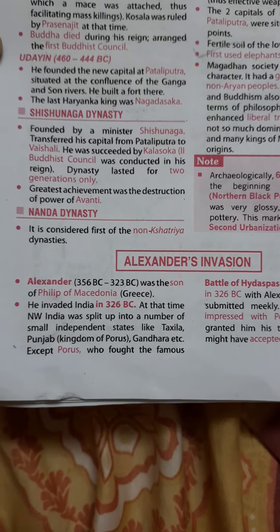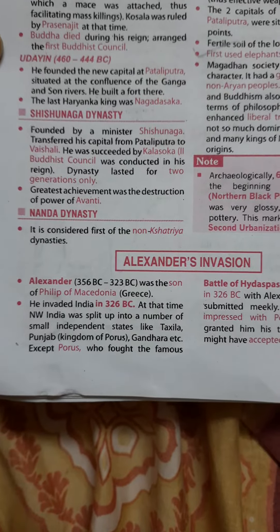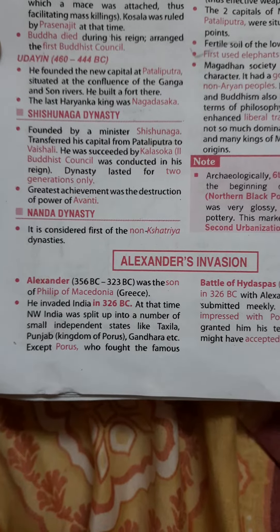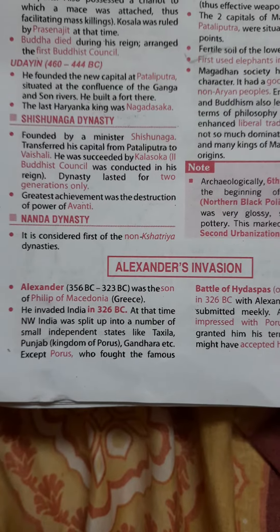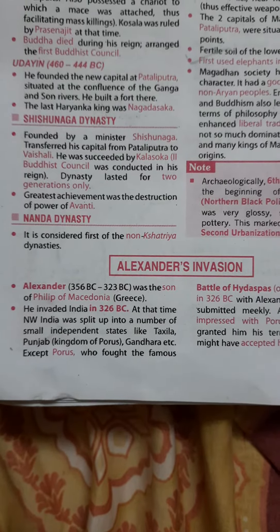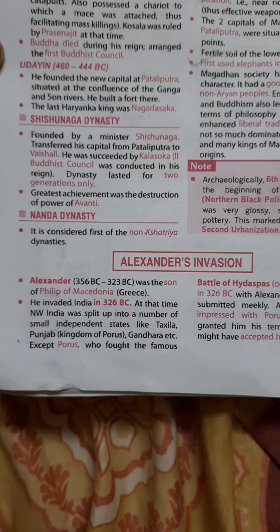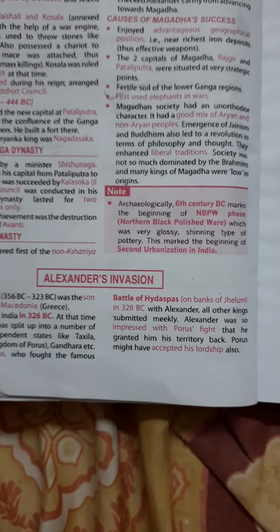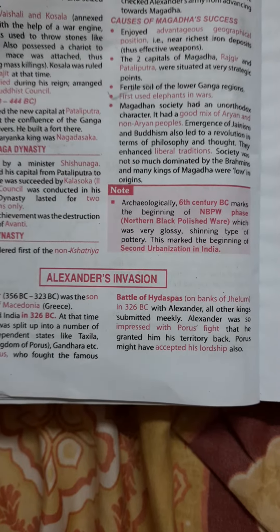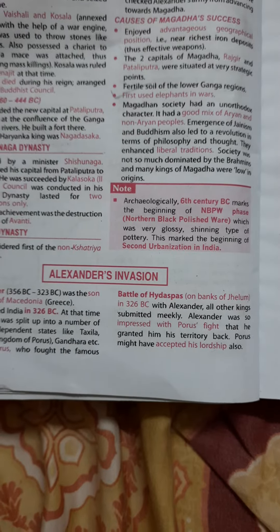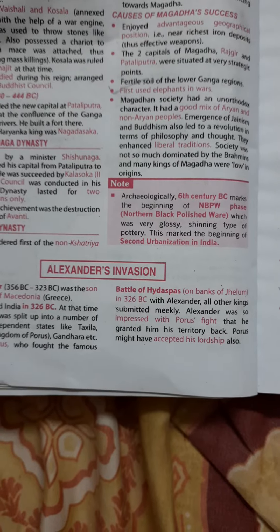At that time, Northwest India was split up into a number of small independent states like Taksila, Punjab, Kingdom of Poros, Gandhara, etc. Except Poros, who fought the famous Battle of Hydaspes on the banks of the Jhelum in 326 BC with Alexander, all other kings submitted meekly.